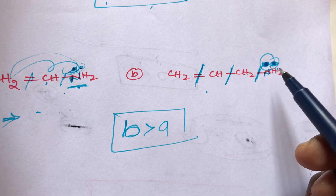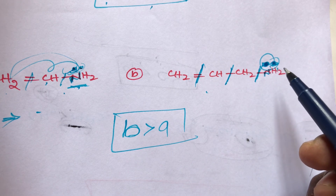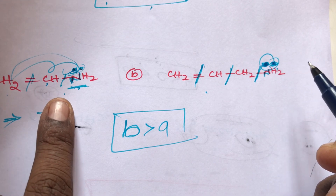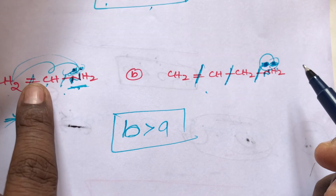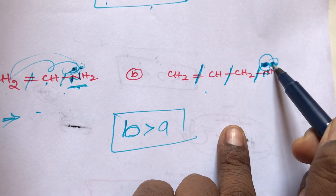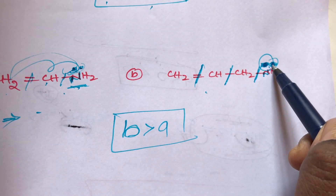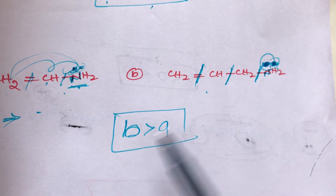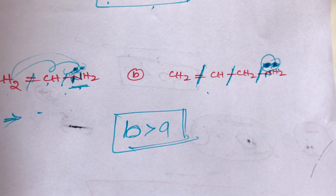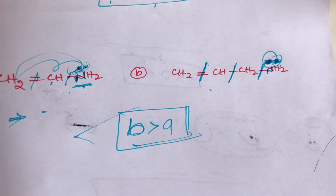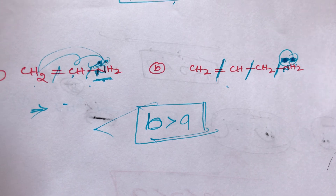In compound A, the lone pair disappears due to resonance; in compound B, the lone pair does not change. More lone pairs available means more basic strength. So compound B is more basic strength than compound A. This is the simple trick. If you like my video, please like, share and comment. Thank you.